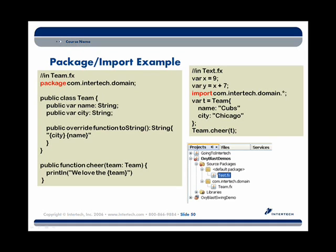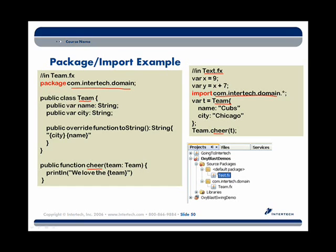Let's take a look at an example. Here we've defined a JavaFX class called Team, along with a JavaFX function called Cheer. Cheer doesn't have to be part of the Team class — it could be its own static function. So we've got Team and Cheer defined in the com-intertech-domain package. To use that code from the Team FX file in some other file — in this case test.fx — we can see the use of the import statement to import both Team and the function Cheer, allowing us to use them as if they were part of the test.fx code. Notice again, the import statement can occur anywhere inside of that script file; it doesn't have to be the very first line as it would in a Java file.